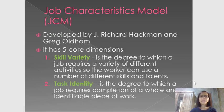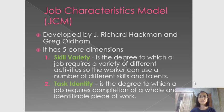We have the JCM, or the Job Characteristics Model. This was developed by J. Richard Hackman and George Oldham. It has five core dimensions. The first one is skill variety — the degree to which a job requires a variety of different activities so the worker can use a number of different skills and talents. For example, since I'm a teacher, I think that teaching has a lot of skill variety in it.